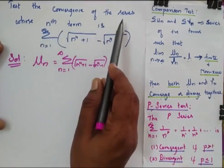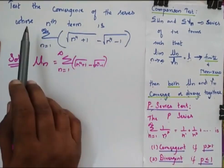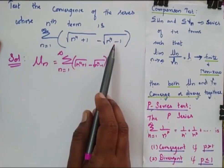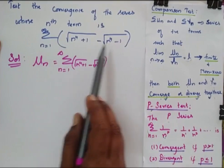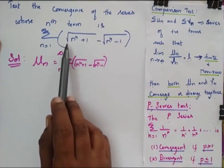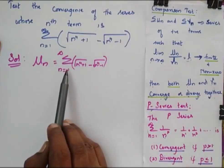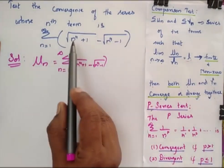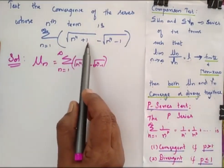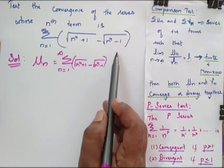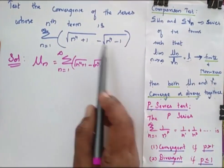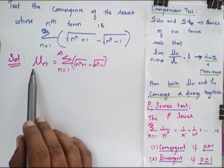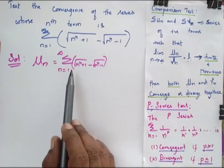Test the convergence of the series whose nth term is square root of n power 4 plus 1 minus square root of n power 4 minus 1. This is the nth term, and I am considering it as un.